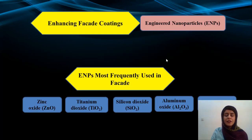By adding engineered nanoparticles to façades we can improve their properties. The most frequently used nanoparticles in façade coatings include zinc oxide, titanium dioxide, silicon dioxide, aluminum oxide and silver.